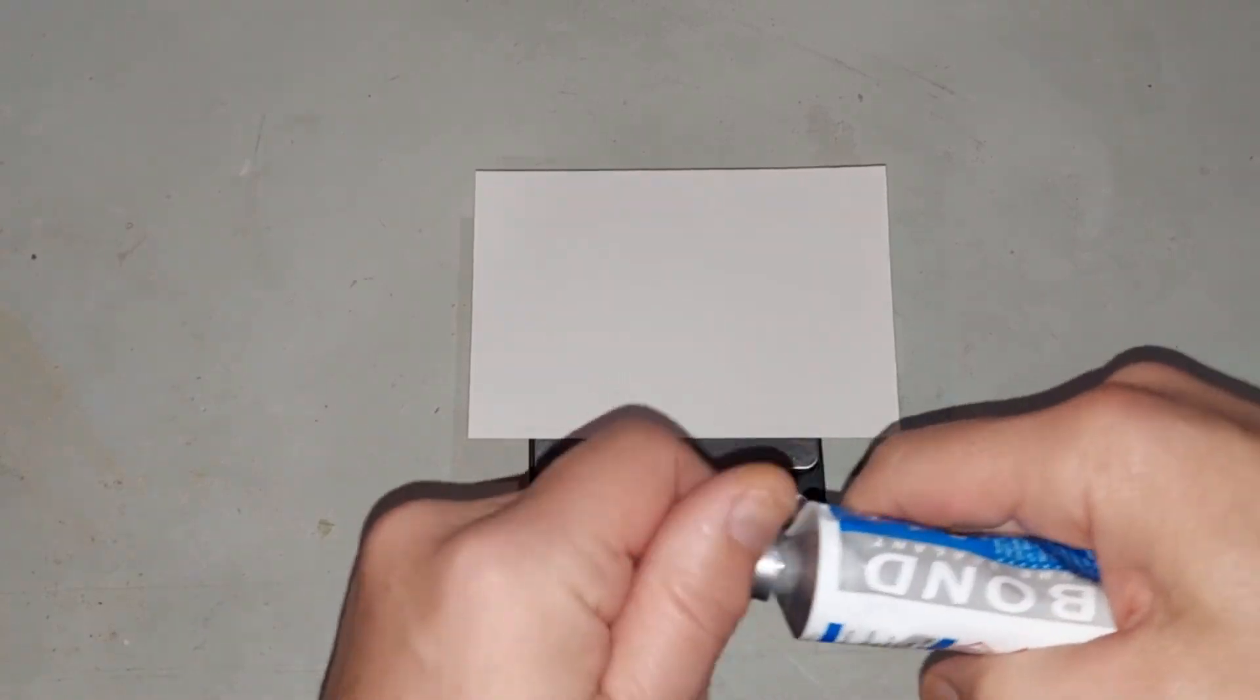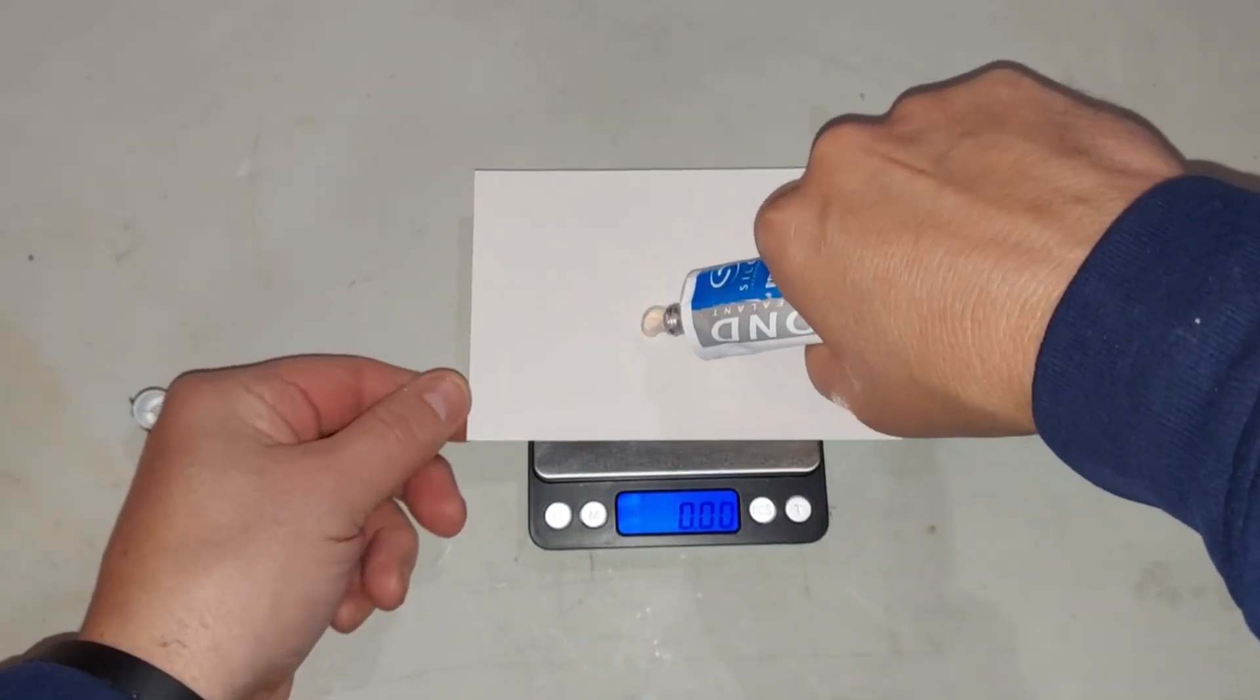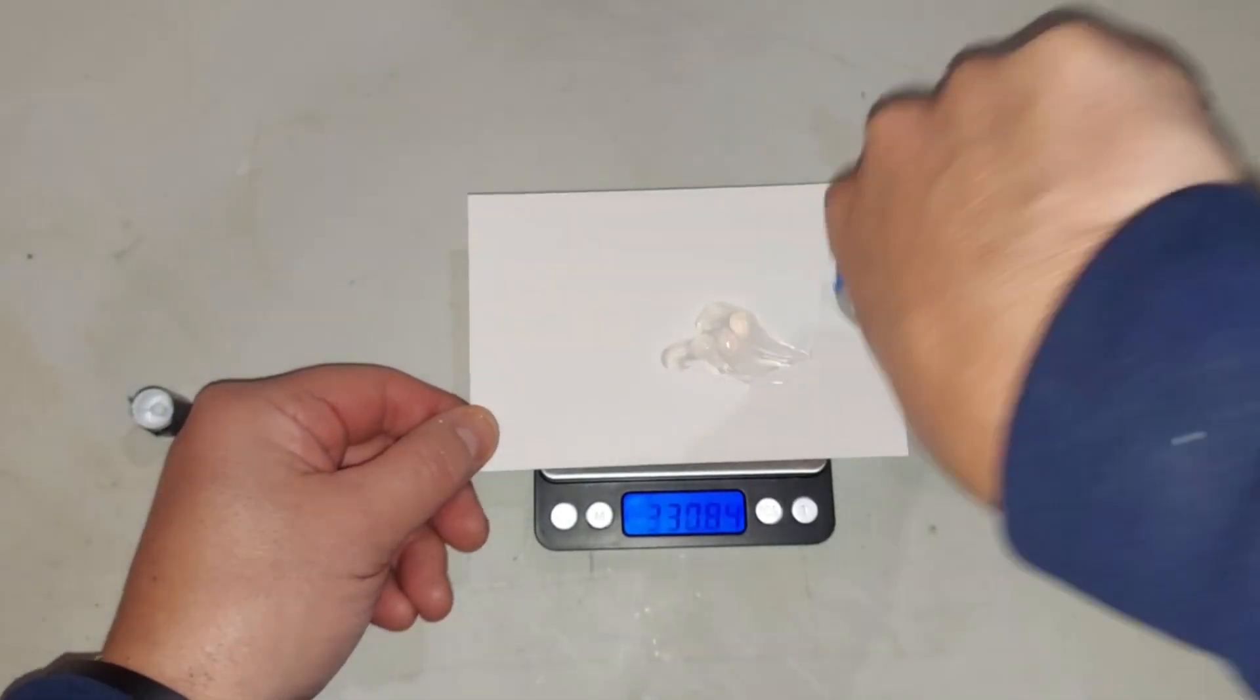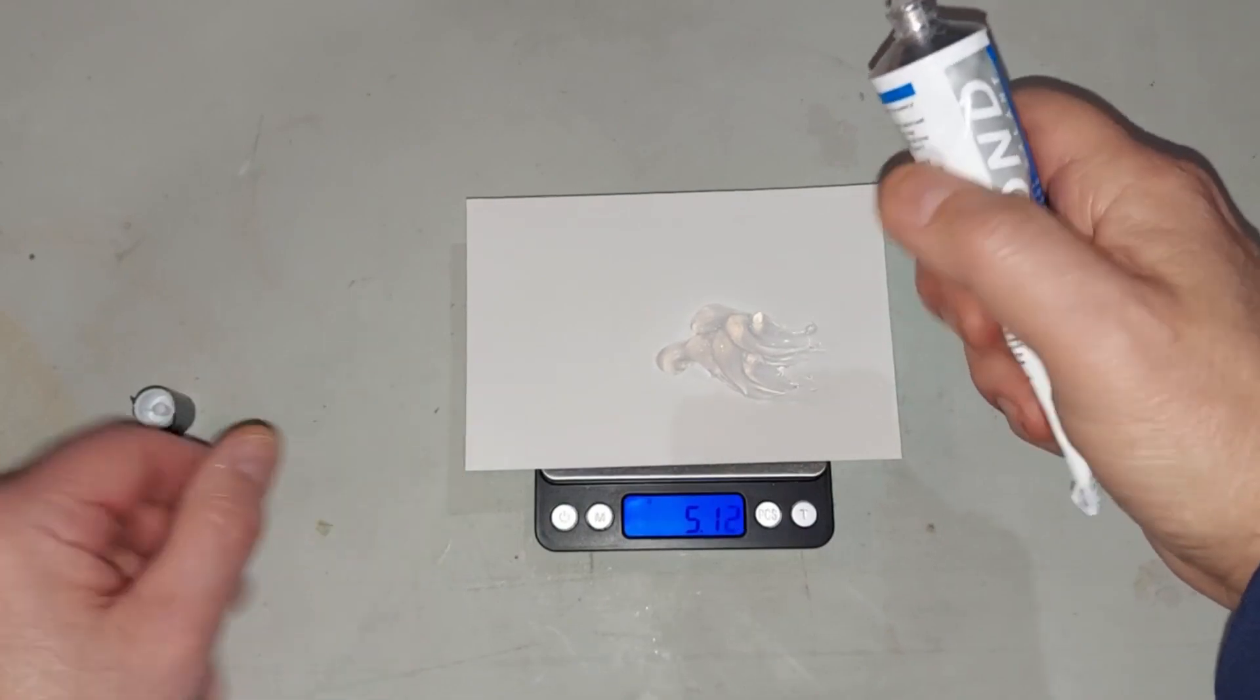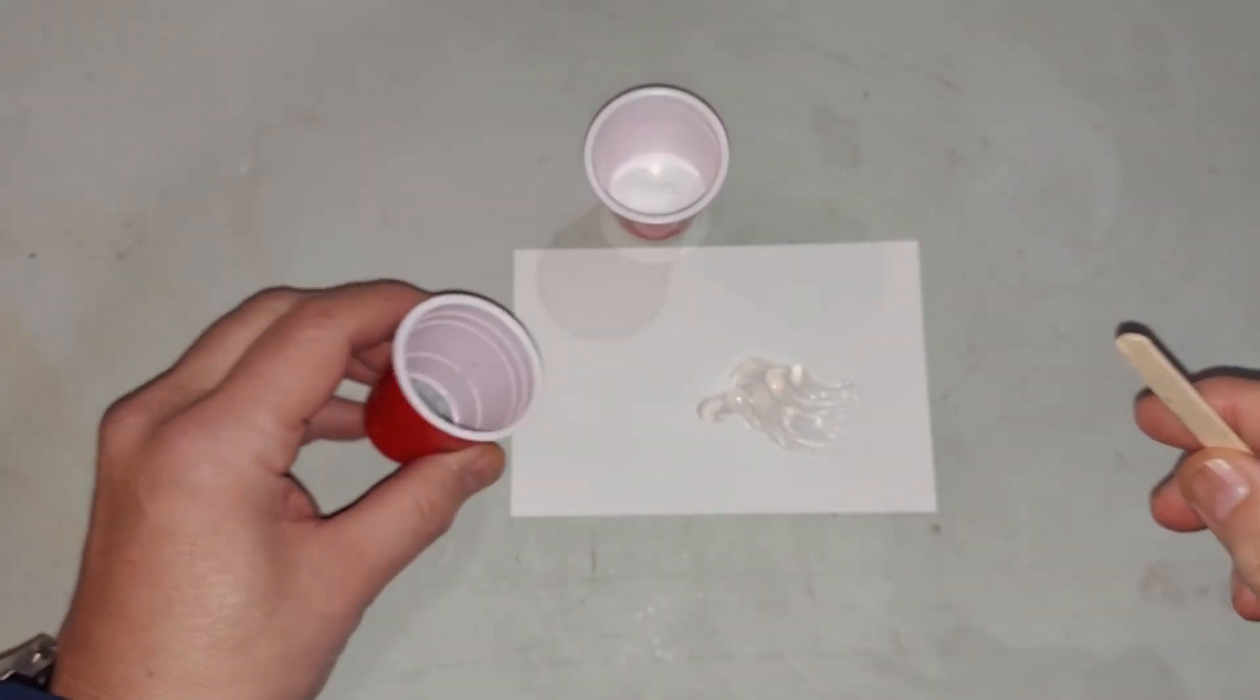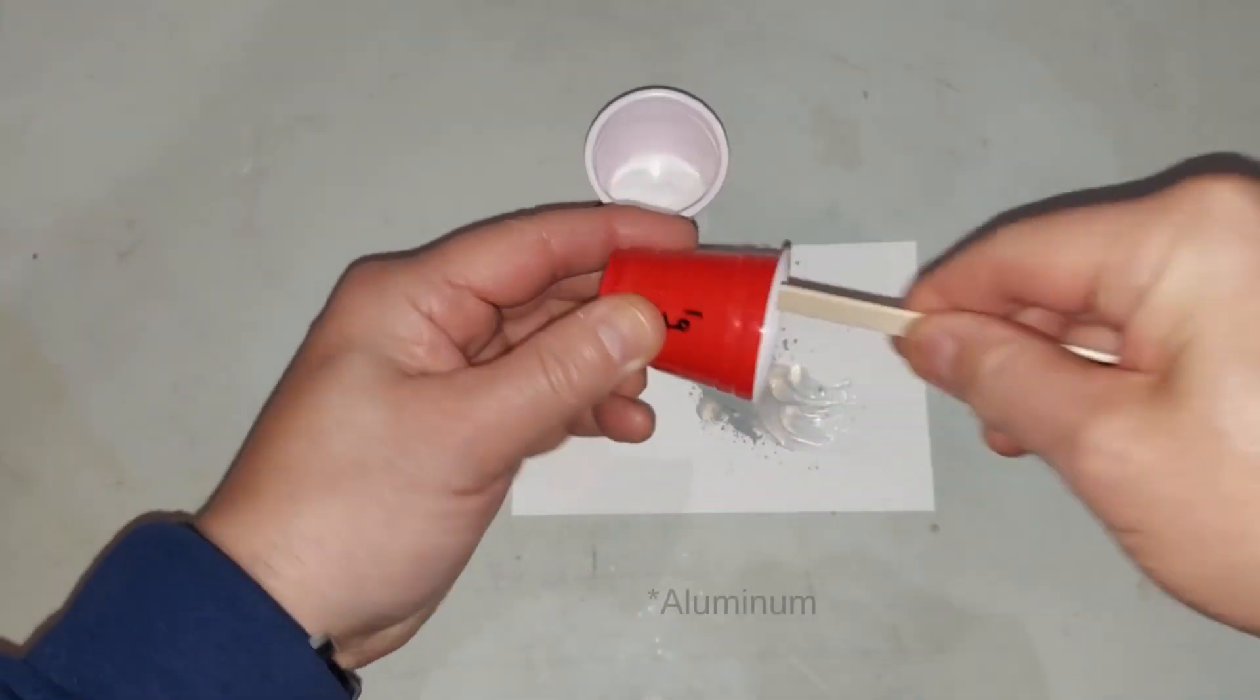For the first mix I'm going to weigh out five grams of silicone. Okay, tiny bit too much but that's okay. So I'll be mixing in my one gram here of magnesium to start.